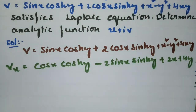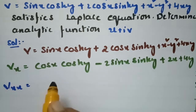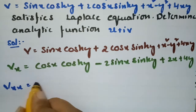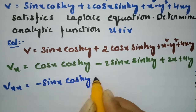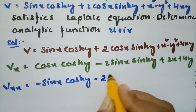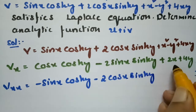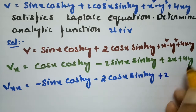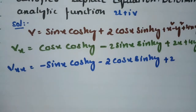Now I have to take the double derivative with respect to x. For cos(x) this is minus sin(x), and cosh(y) remains as usual. For minus sin(x) times sinh(y), differentiating gives minus cos(x)sinh(y). The 2x term gives 2, and the 4y term gives 0. This gives us v_xx.